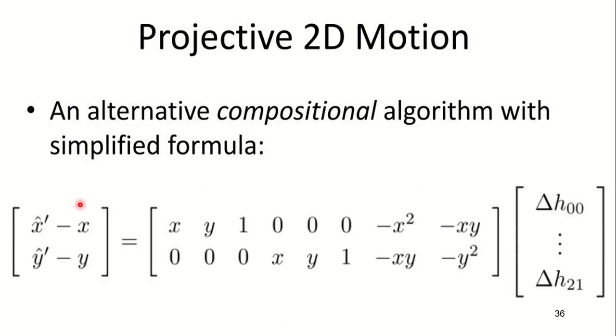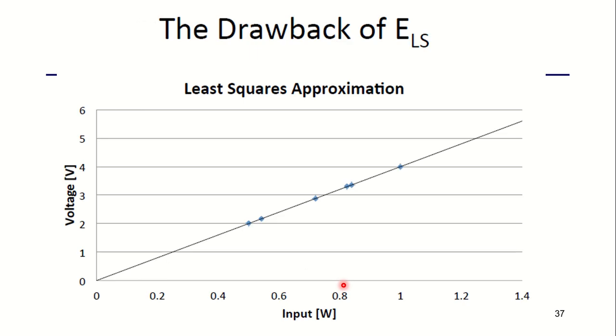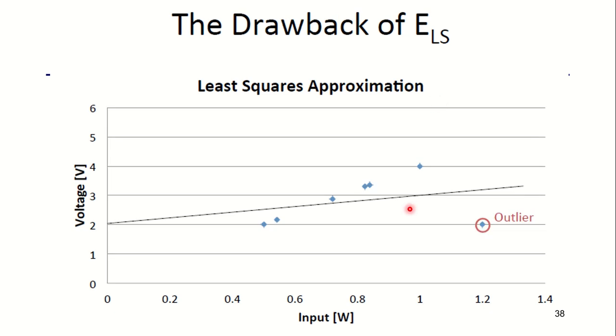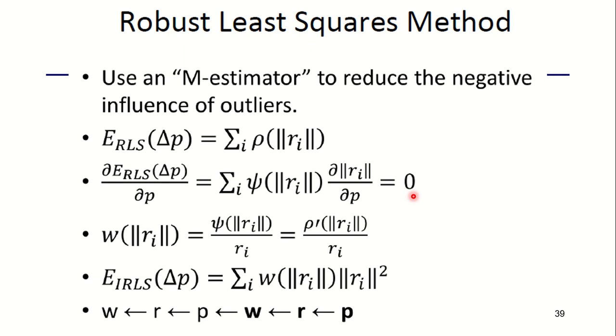This is the least squares approximation graph. You have a linear line where all the data points lie. The drawback of E_LS is if the data points do not lie on this line. These points are called outliers which are far from the line which you have from the linearity relationship. To avoid that, we use the robust least squares method in which we use an M-estimator which reduces the negative influence of the outliers, and this gives the relationship of E_RLS.